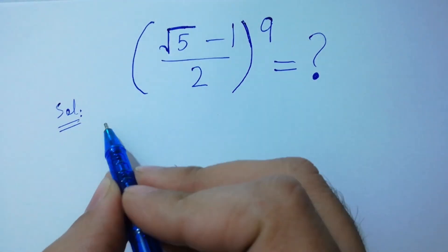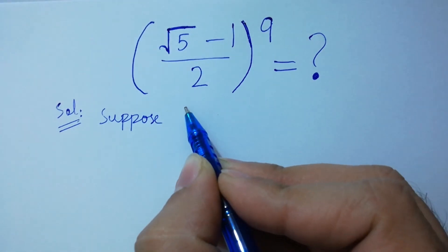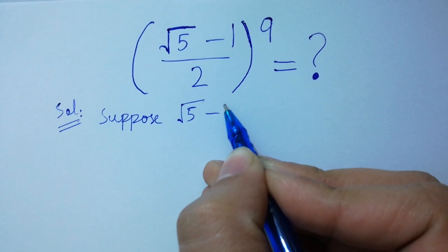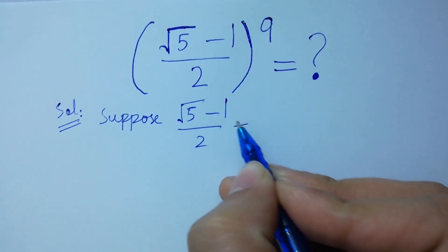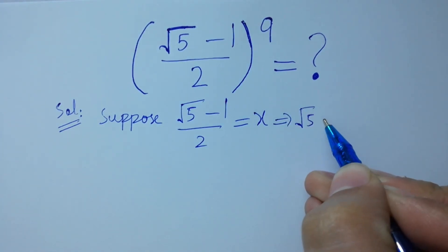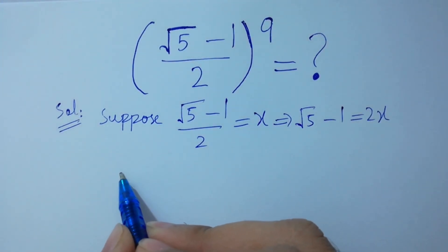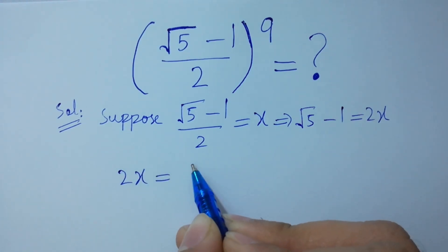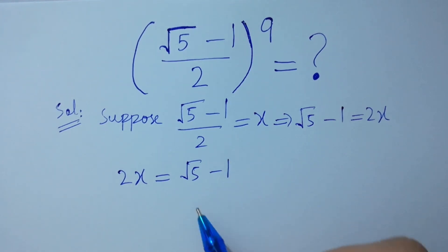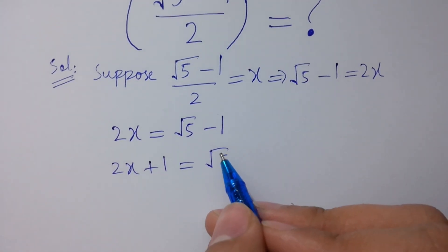To simplify this, suppose that (square root of 5 minus 1) over 2 equals x. Then square root of 5 minus 1 equals 2x, which is the same as 2x equals square root of 5 minus 1. Moving 1 to the other side: 2x plus 1 equals square root of 5. Now take the square on both sides.